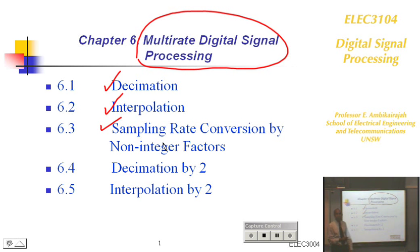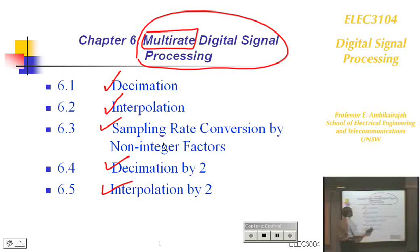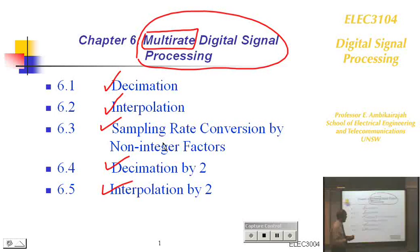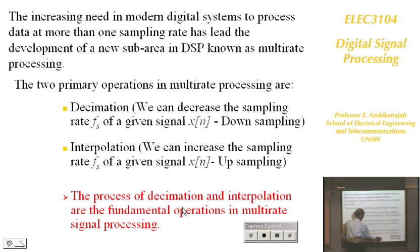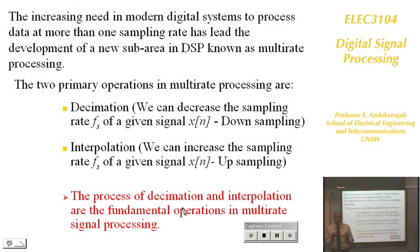We'll be looking at decimation by 2 and interpolation by 2 in particular. The first thing you need to know is what is a multirate system. So far, we have looked at systems with only one sampling rate throughout. In a multirate system, you could have an input at one sampling rate and an output at a different sampling rate.